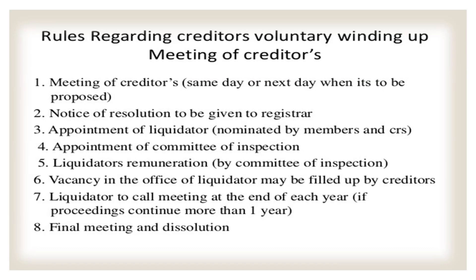The rules regarding creditors' voluntary winding up: the meeting of the creditors should be called along with the company's meeting. A notice of the resolution should be given to the registrar within 14 days. The appointment of a liquidator should be nominated by the members and creditors — the creditors' nominee will be the liquidator. The creditors can appoint a committee of inspection for assisting the liquidators, and the remuneration of the liquidators should be mentioned in that meeting. The vacancy in the office of liquidator may be filled up by the creditors. The liquidator must call a meeting at the end of each year, and the last procedure is the final meeting and dissolution of the company.